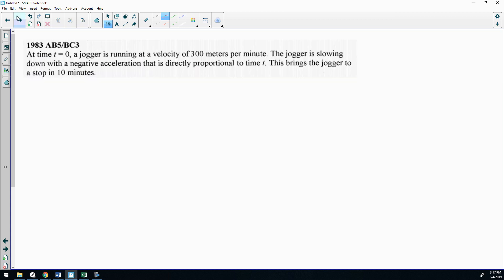So this one's a free response question. At time zero, a jogger is running with a velocity of 300 meters per minute. So at time zero, my velocity is 300. The jogger is slowing down with a negative acceleration that is directly proportional to t. So my acceleration is directly proportional to some constant multiple of t. This brings the jogger to a stop in 10 minutes. So a stop in 10 minutes means that your velocity at time 10 is zero because we're stopped at time 10. That's a very slow, gradual slowdown, but whatever. Because all the information was given to you in terms of velocity, I don't want to use a(t). Instead, I'm going to think of that as v'(t) equals kt. Then for the sake of being more consistent with differential equations, I'm probably going to call that dv/dt equals kt.